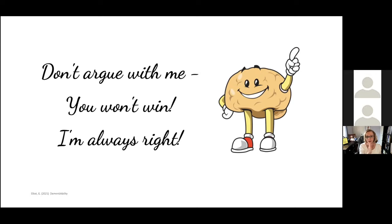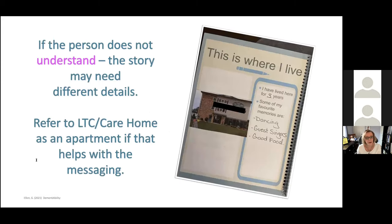Another example is if a person is moving to or living in long-term care — you may not want to refer to it as a nursing home. You might call it an apartment. When you put details in the book, change the messaging to suit the person and create success. Don't argue. So when creating the memory book, ask yourself: what would stimulate conversation? What facts should go in there? What does the person want in the book?